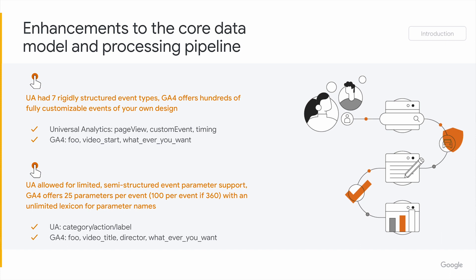Adding to that, we also have a flexible set of parameters that can be sent with each event. Going back to Universal Analytics, we had a system where you could send a set of parameters — highly valuable parameters — but a strict set of parameters. Specifically for custom event, category, action, and label was the way that you could send any and all information, and you had to best fit whatever you were trying to collect into those three parameters.